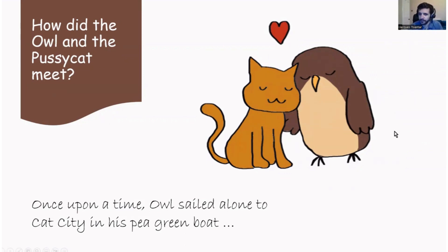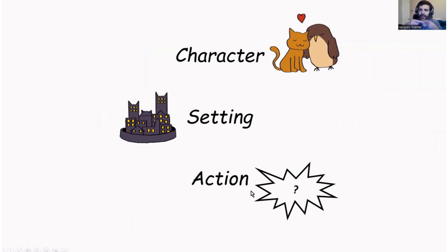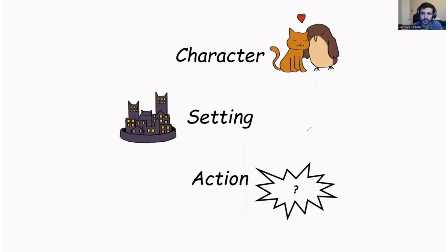So if you've done that, we can move on. There are three things that every good story needs: we need good characters, we need a good setting, and we need action — we need things to happen in the story. Now, we have our characters — who are they? The Owl and the Pussycat. We have our setting — that's Cat City. And what we need to do is develop the characters and the setting, so we're going to start with the characters first.